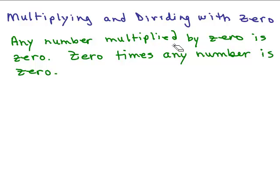We're going to start with multiplication. Any number multiplied by zero is zero, and also zero times any number is zero. So for instance, if we've got seven times zero, that's a number multiplied by zero — that's just zero. What multiplication really means is what would happen if you added seven zeroes together? Zero plus itself seven times is going to be zero.